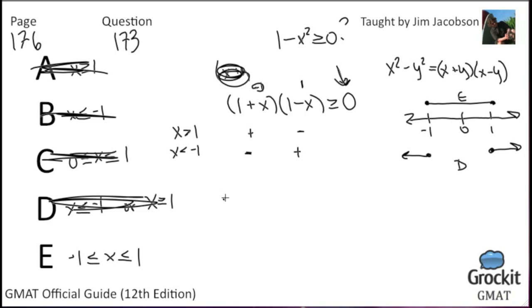For choice E, if x is a fraction like 1 half, 1 plus 1 half in the first term ends up being a positive number. 1 minus 1 half, even though it makes this second expression smaller, it stays positive. Positive times positive still gives us greater than or equal to 0. It wouldn't be equal to 0, but we already established that x could be 1 or negative 1 itself. So answer choice E must be our correct answer.